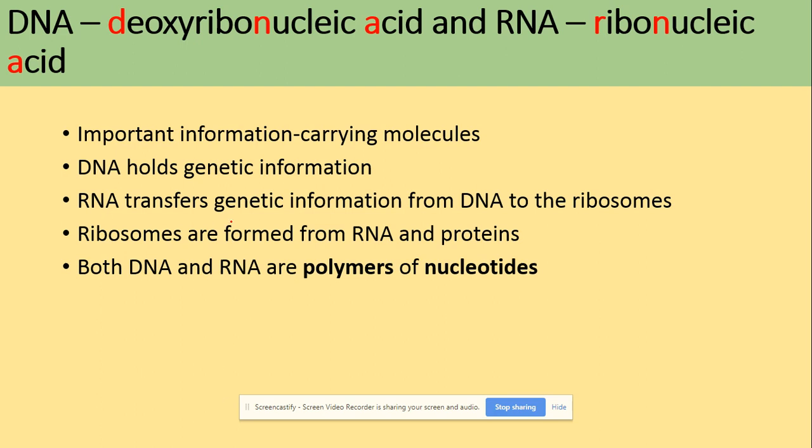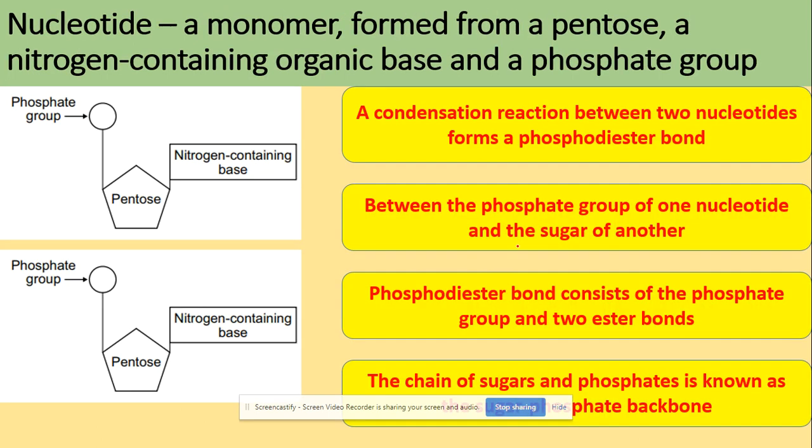Ribosomes are made from RNA and proteins, and both DNA and RNA are polymers of nucleotides. So nucleotide is a monomer. So how does a nucleotide look? The nucleotide contains a phosphate group, a pentose sugar which has five carbons, and a nitrogen-containing base.